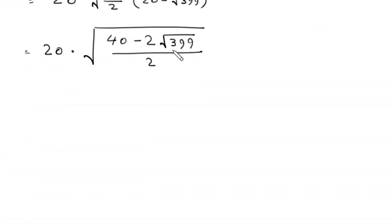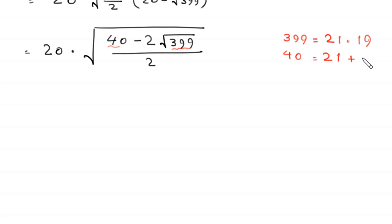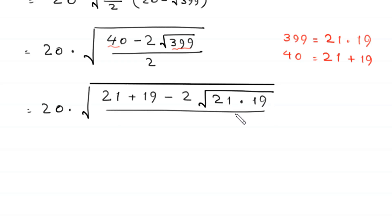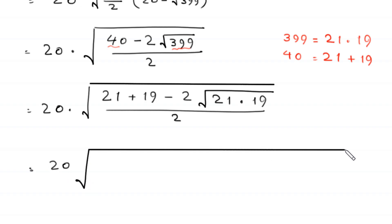Now 399 can be written as 21 times 19, and 40 can be written as 21 plus 19. So we write this expression as 20 times the square root of 21 plus 19 minus 2 times the square root of 21 times 19, all divided by 2.